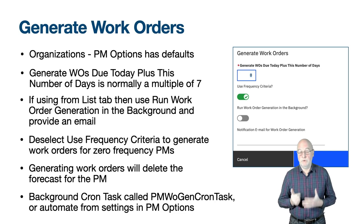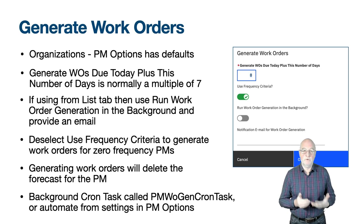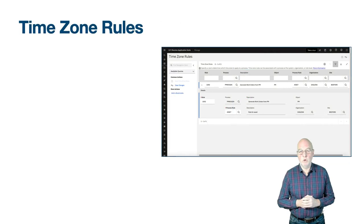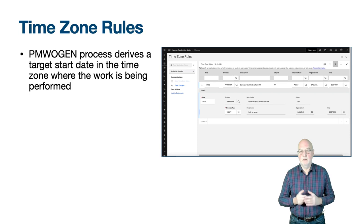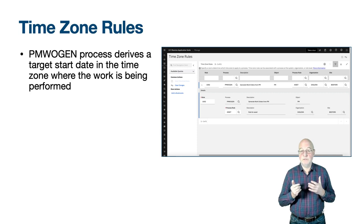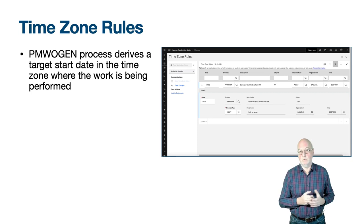You can have multiple instances of the cron task for greater flexibility. For example, a utility company with one site and many regions can spread the load, with each area having work orders generated at a different time of night. Each cron task instance takes three parameters: a site ID or comma-separated list of site IDs, a SQL where clause to filter PMs, and a log file directory and file name.